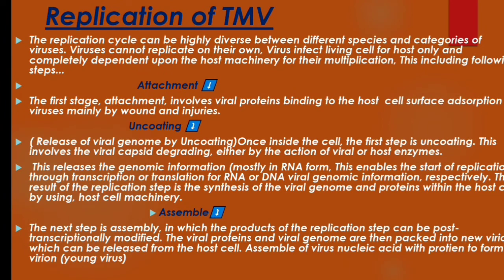Next is the replication of TMV. The replication cycle can be highly diverse between different species and categories of viruses. The virus cannot replicate on its own. The virus infects a living host cell and is completely dependent upon the host machinery for multiplication. This includes the following steps. The first stage, attachment, involves viral protein binding to the host cell surface — adsorption of the virus mainly through wounds and injuries on the plant.